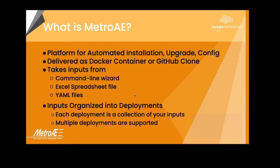There are several methods for providing inputs to the software. One is a command line wizard — you execute a command that takes you through an interview process, asking questions about the deployment or upgrade you want to do. There's also an Excel spreadsheet input, which we're going to be highlighting today. And of course the main input is YAML files, which you can edit directly. YAML files are particularly good for implementing infrastructure as code — you can put your YAML files in your favorite SCM system, check them out, and then run Metro.